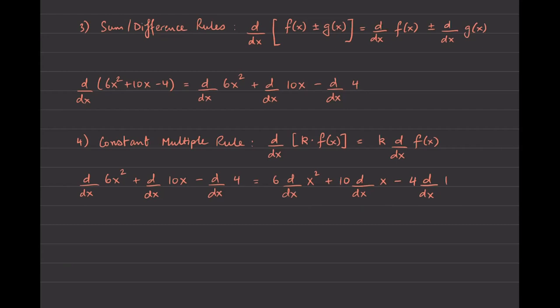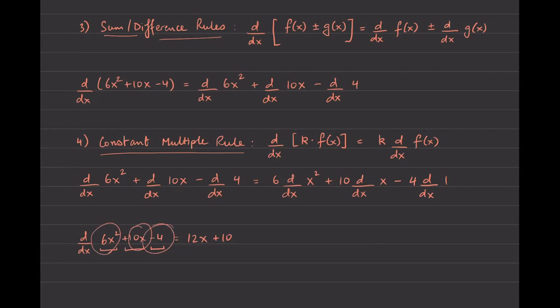So the sum and difference rules and the constant multiple rule together allow us to find the derivative of 6x squared plus 10x minus 4 by taking the derivative of each piece: 12x plus 10, and the constant 4 vanishes. These rules guarantee behind the scenes that we can split the expression into separate derivatives, pull out constants, and glue the answers together. The downside is that students incorrectly think this extends to products and quotients — the derivative of f times g is NOT f prime times g prime. Very common mistake — please avoid it.